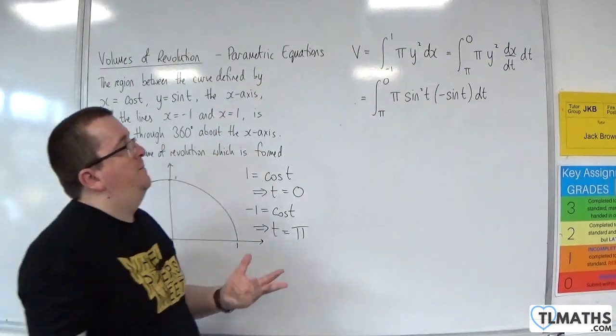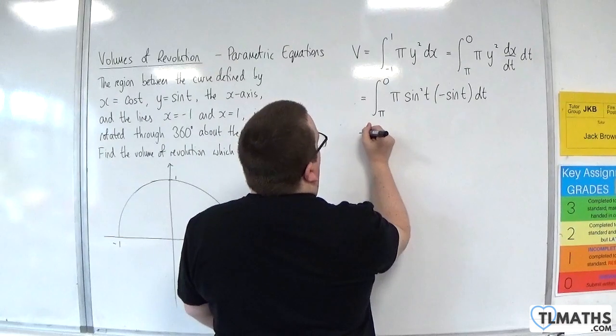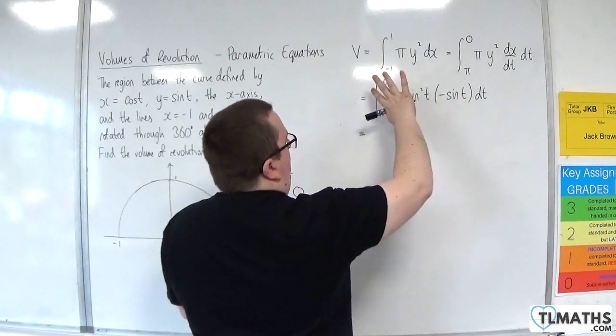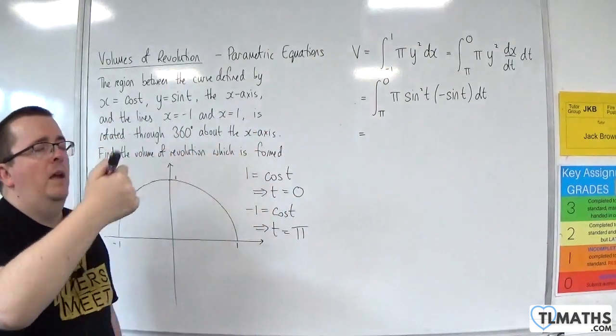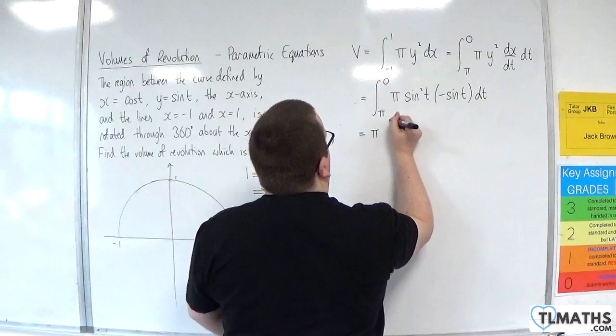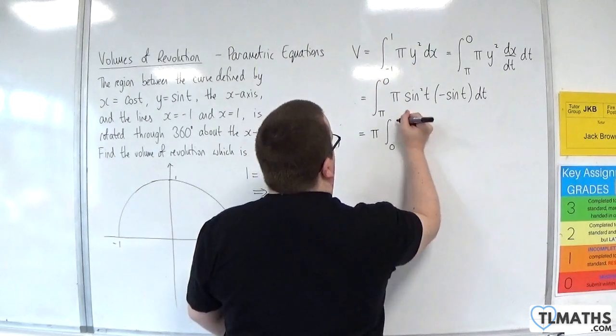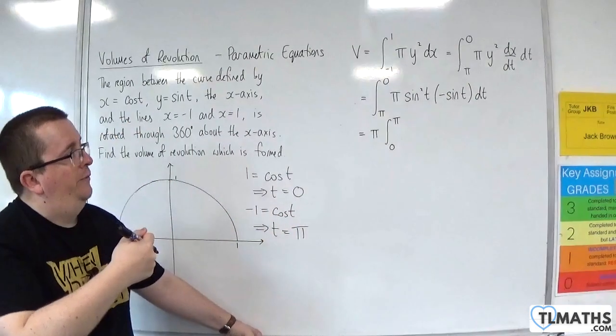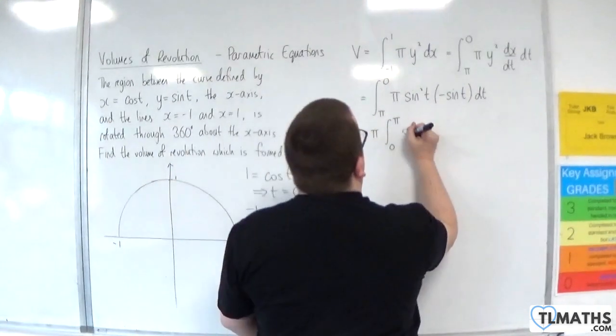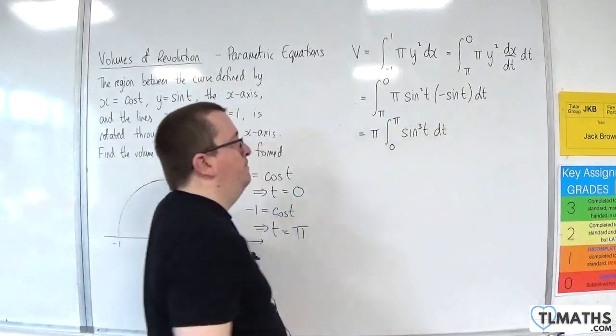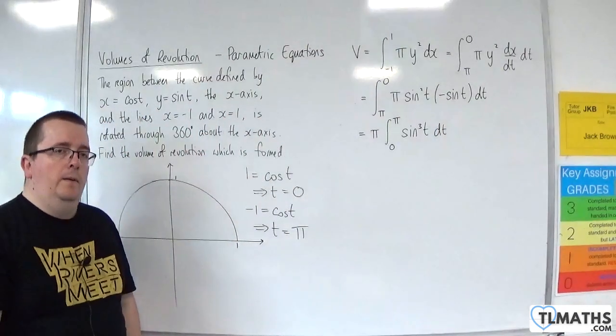Now, there's a couple of things I can do here. The first thing that I would do is I would bring the minus sign through, and that's going to flip the limits. I'm also going to bring the pi to the outside of the integral. So pi times the integral, now between 0 and pi. So remember, that minus sign has been used to flip the limits. And we've got sine cubed of t dt.